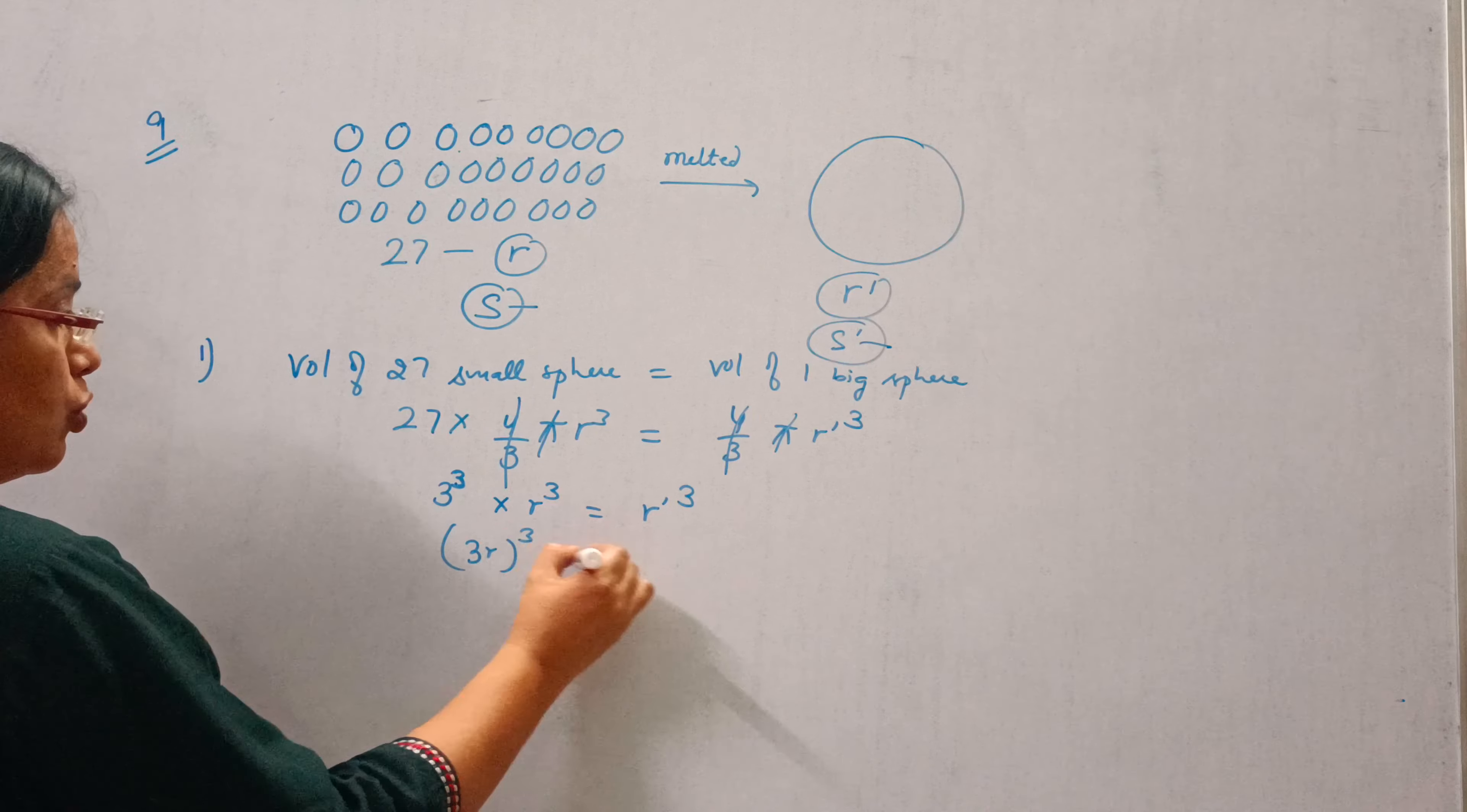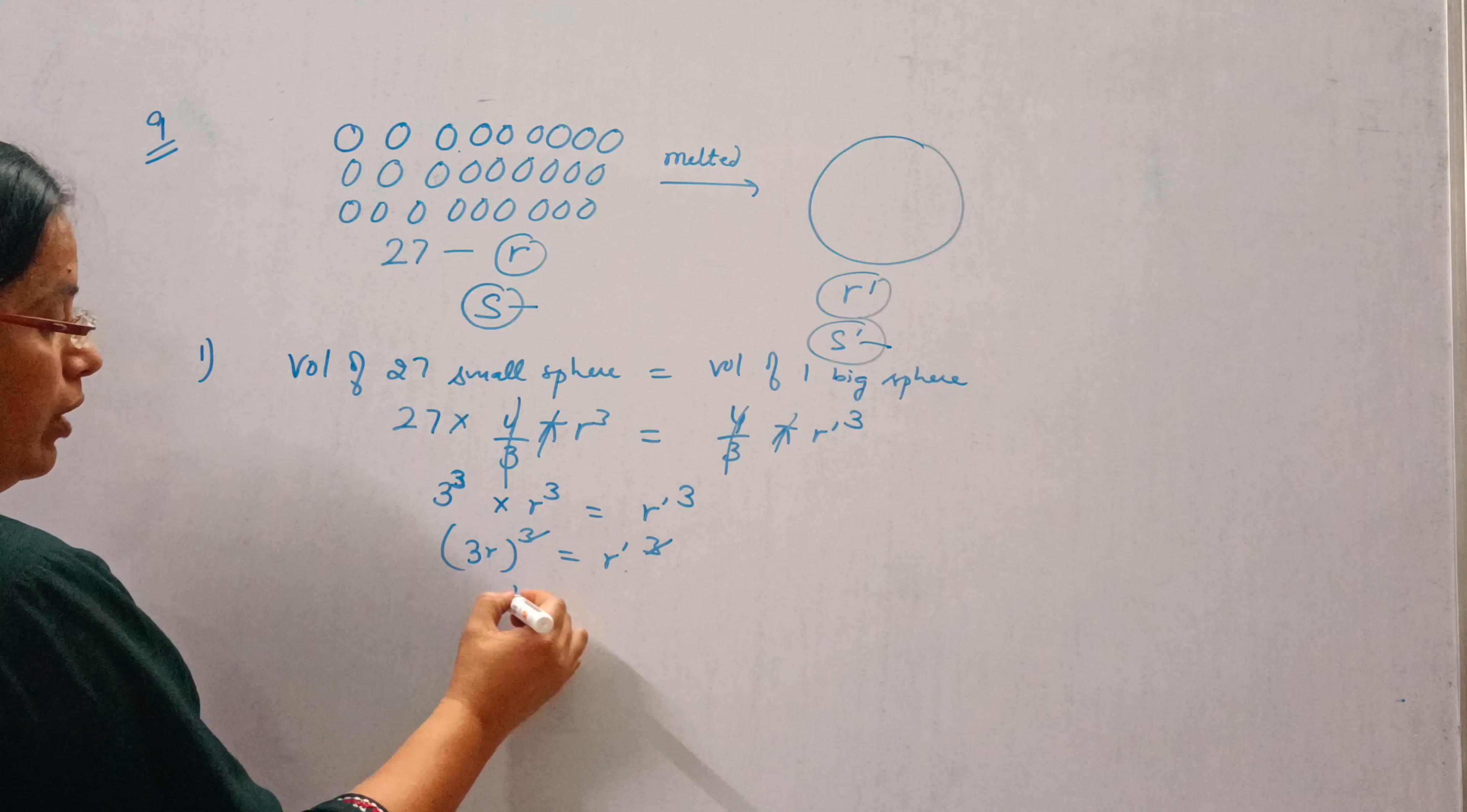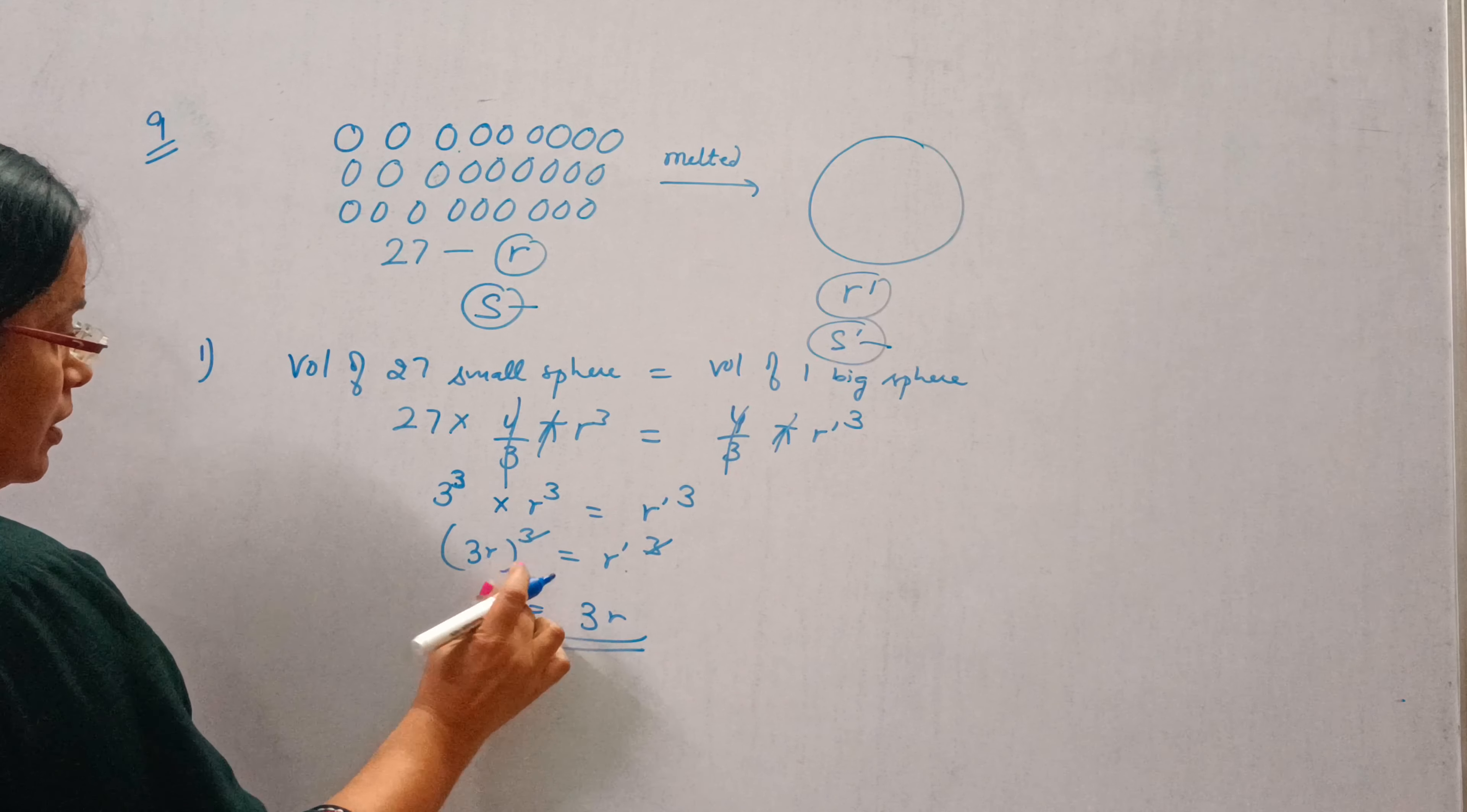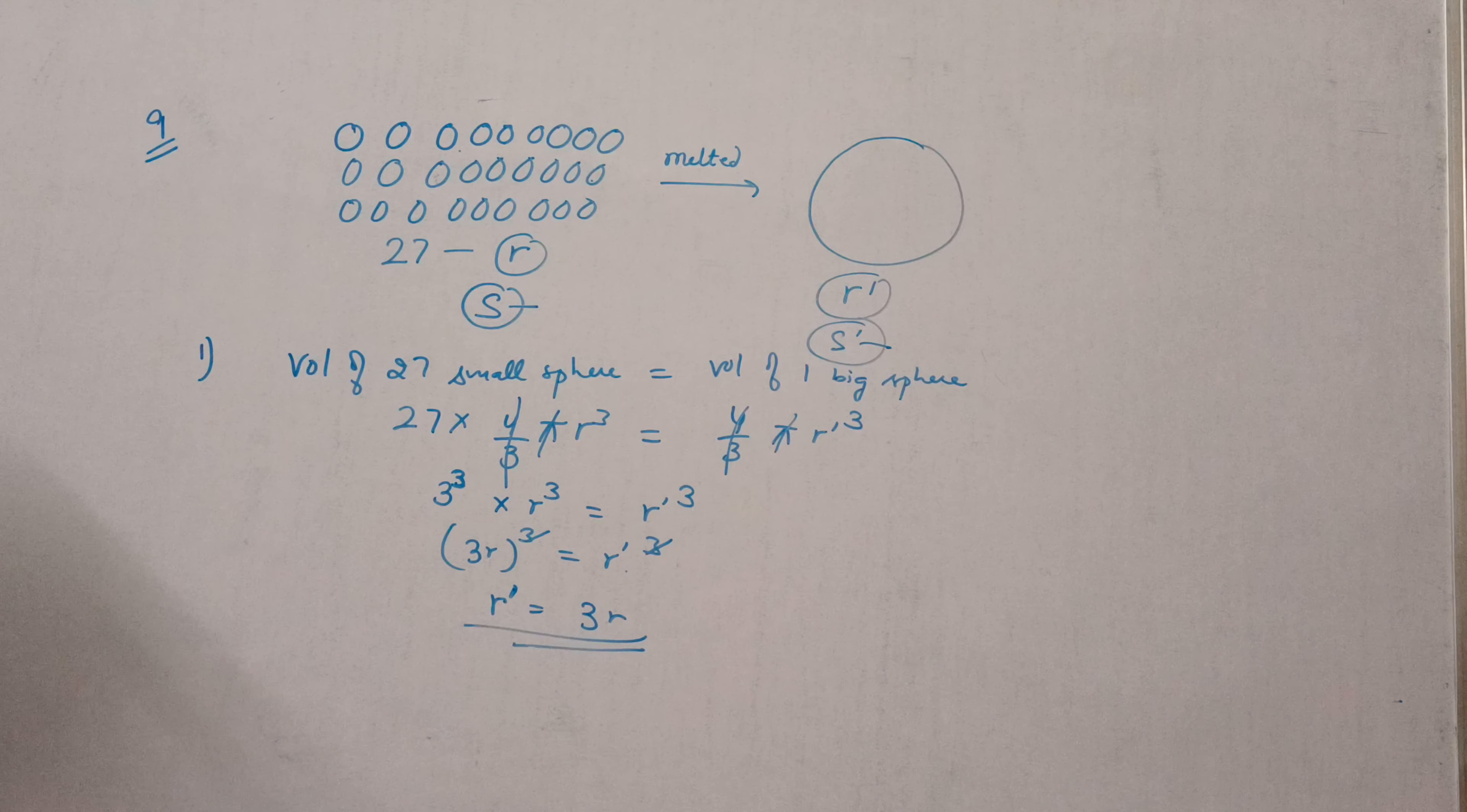So we can take the cube as common, cut cube by cube. So R dash will be equal to 3R. This is the first part. The radius of the new sphere is 3R.